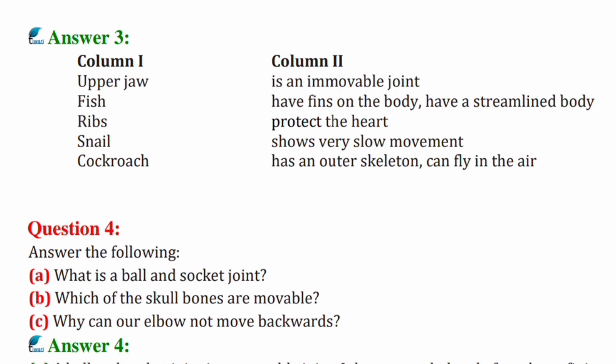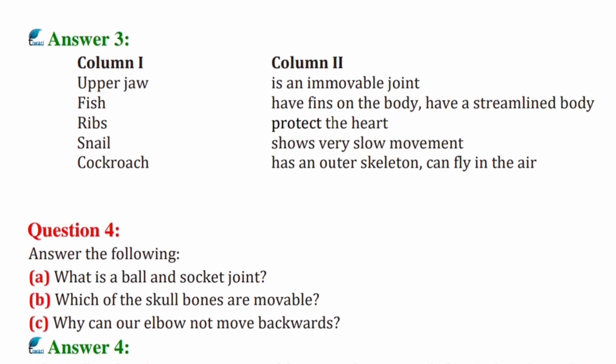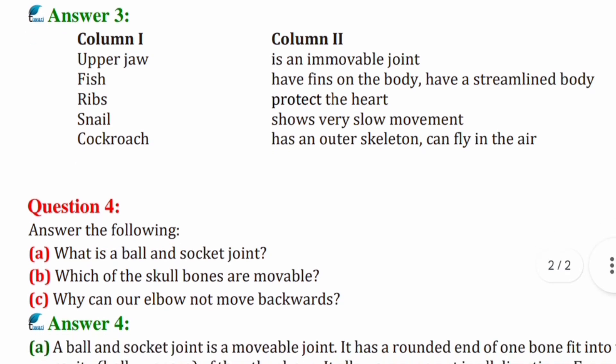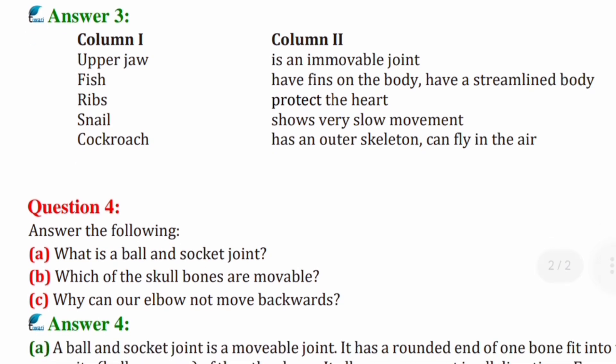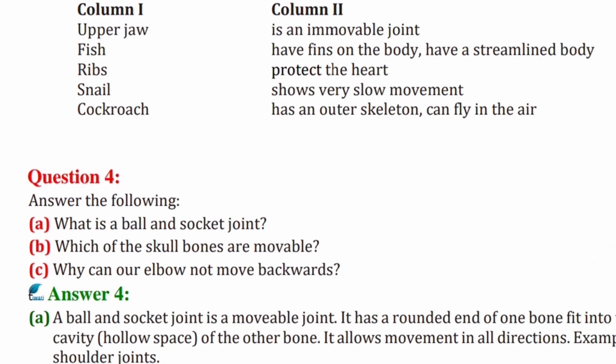Next, question four: Answer the following questions. (a) What is a ball and socket joint? A ball and socket joint is a movable joint. It has a rounded end of one bone which fits into a cavity or hollow space of the other bone. It allows the movement in all directions. Example: shoulder joint.